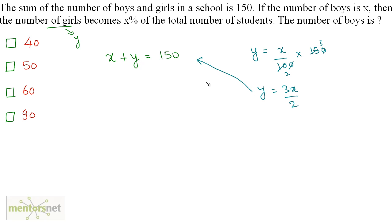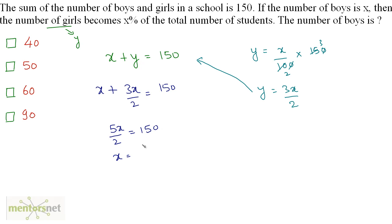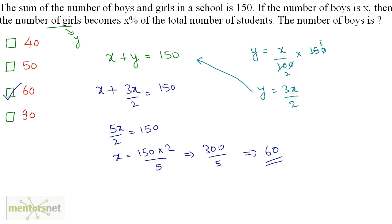Substituting Y = 3X/2 into X + Y = 150: X + 3X/2 = 150, so 5X/2 = 150, giving X = 150 × 2/5 = 60. Therefore, there are 60 boys in all.